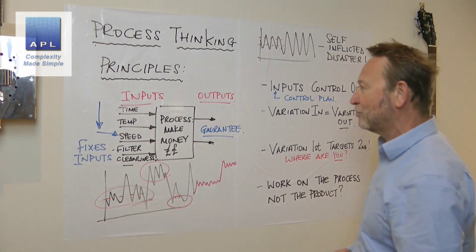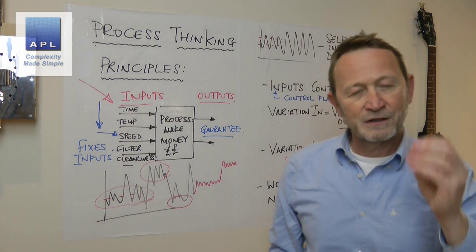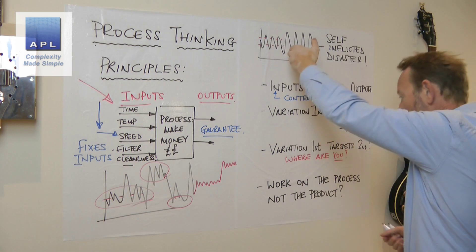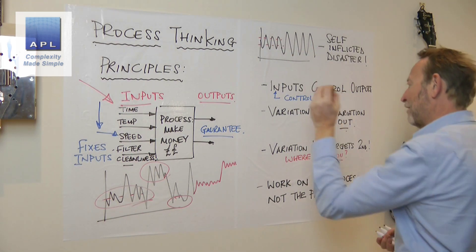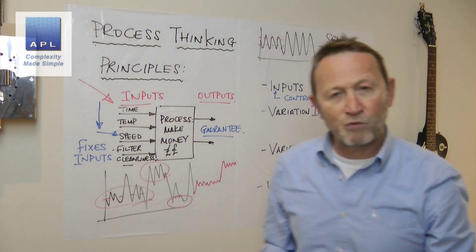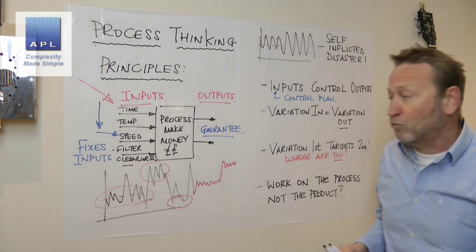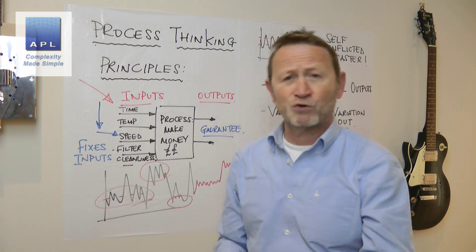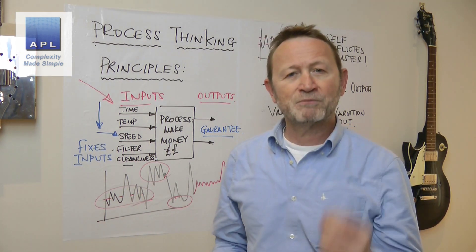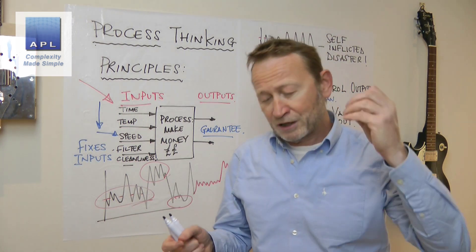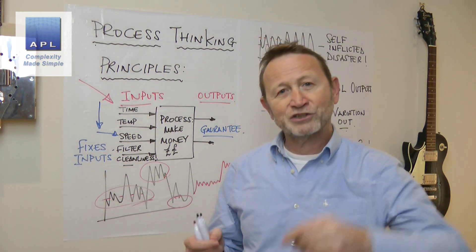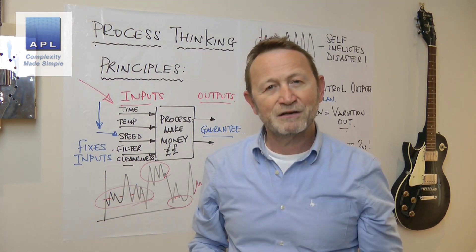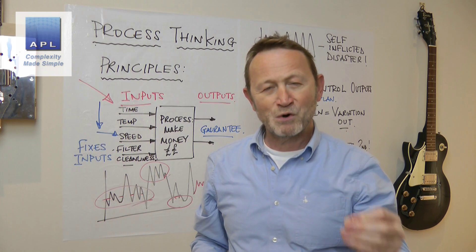Work on the process, not the product. What does the process consist of? Inputs — list them, control them, audit them. Apply those four principles: work on the inputs, get rid of input variation first before looking at targets, and constantly work on the process. Better inputs, better suppliers, better quality, better machines, better auditing — and you'll make piles of cash because you'll please your customers. Your customers cannot get enough of great products from great suppliers, and those come from people who use these four process thinking principles. Use them and make more money.